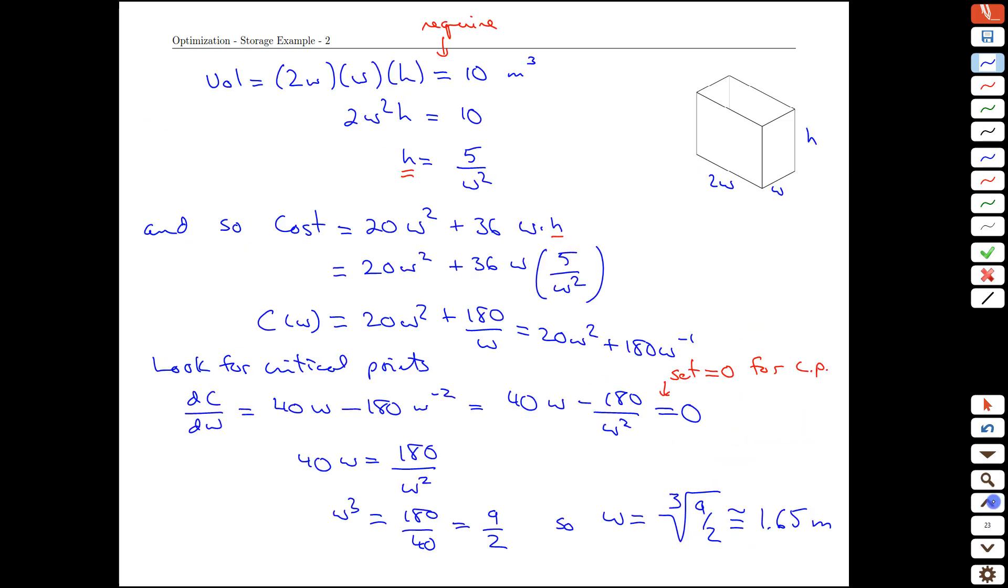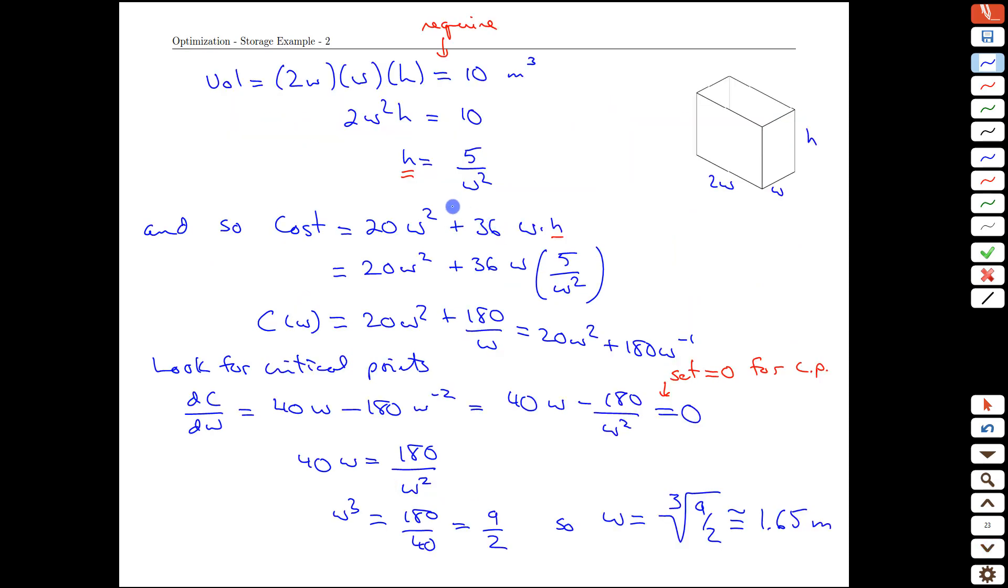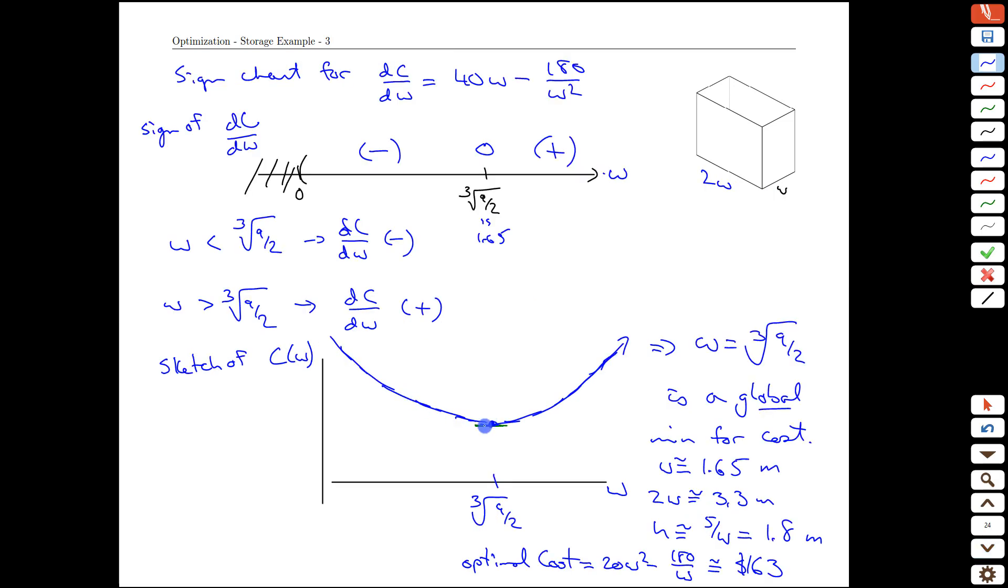Again, notice the steps that we went through, though. We first of all recognized what we were minimizing, cost. Then we built a function for the cost. It was almost right at the outset, but it had a variable extra that we couldn't work with. We needed to get it down to one variable. We used information of the problem to get rid of that variable. And after that, it was a classic optimization task of you have a function, find its critical points, and analyze the function around the critical points to identify that it is a local minimum, or in this case here, actually a global minimum, and find the associated cost with that minimum.